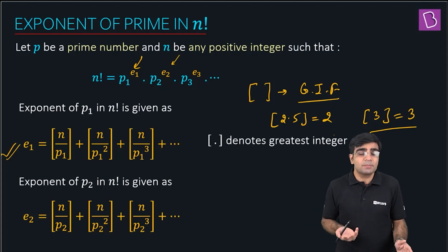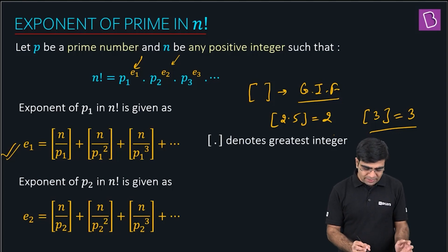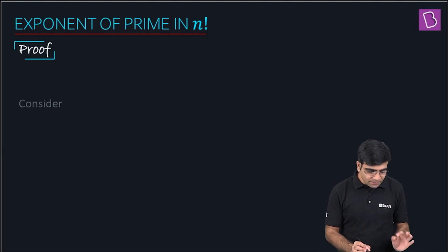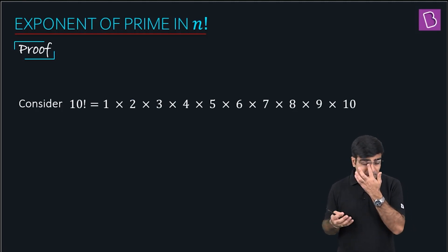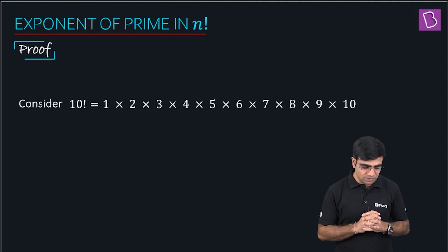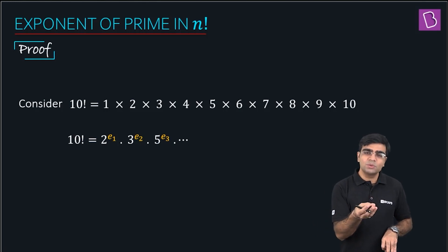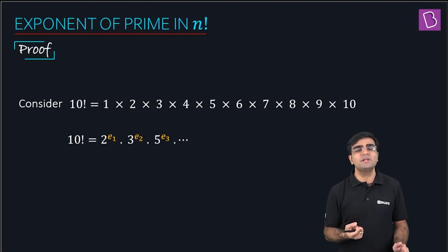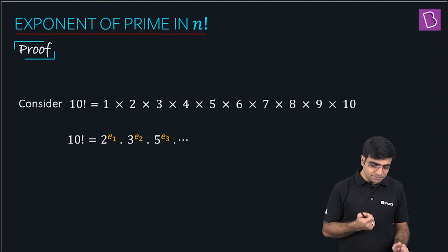To understand where this formula comes from, let me take the example of factorial 10. Factorial 10 = 1 × 2 × 3 × ... × 10 — the product of the first 10 natural numbers. In factorial 10, the primes involved are 2, 3, 5, and 7. So I'll have some exponent for 2, some for 3, some for 5, and some for 7. Let's call the exponent of 2 as e1, exponent of 3 as e2, and exponent of 5 as e3.